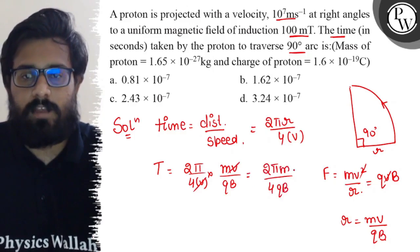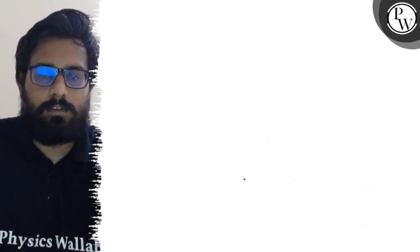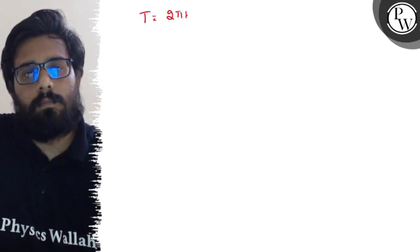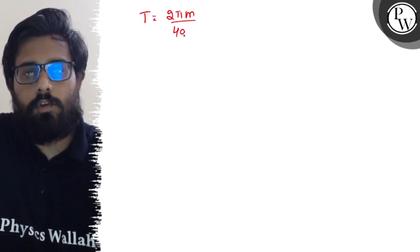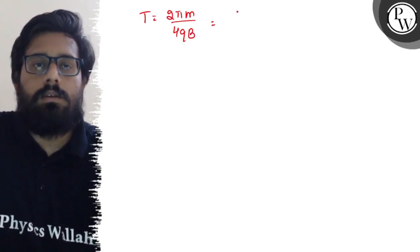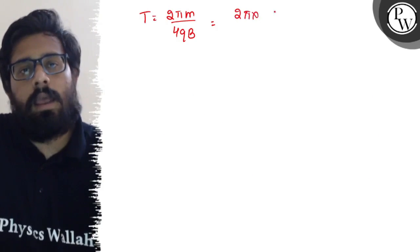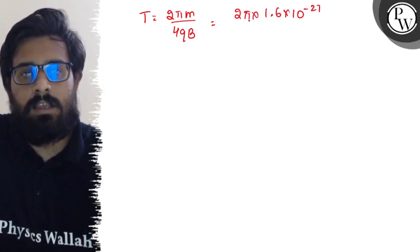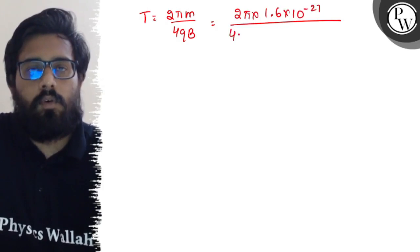This is the value of time. Now just put the values. Let's solve this on the next page. So time formula is 2πm upon 4qB.